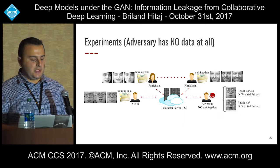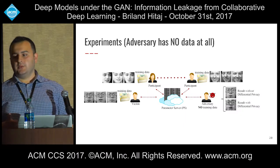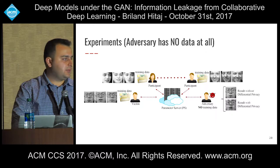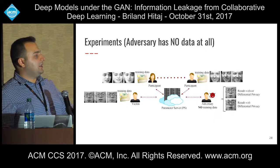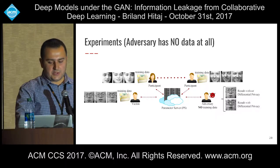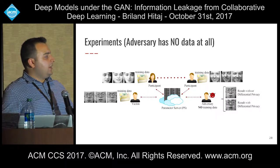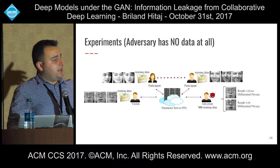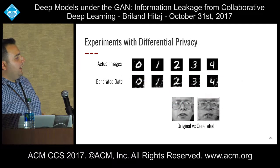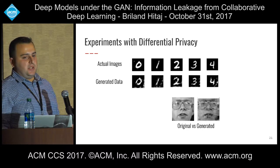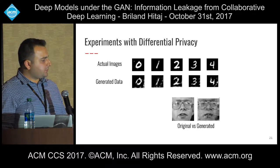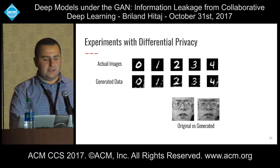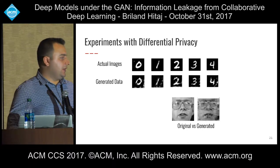We extended our experiments by adding more participants to see how it would affect the process. Most importantly, we gave no training data at all to the adversary — they were just targeting one of the victim's classes. We were successful in reconstructing samples using generative adversarial networks both when differential privacy was adopted and when it was not. In the differential privacy results, at the generated face example, you can still see that the person had facial features resembling the actual training data.